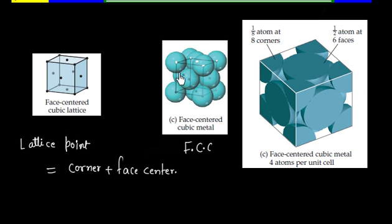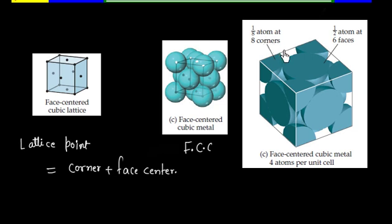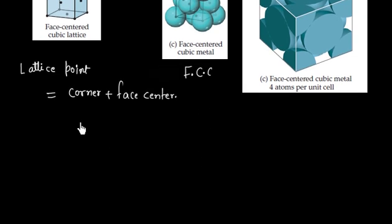Now if I make a cross section to find the effective number of atoms inside this cubic unit cell, we can see we have 1/8 part of the corner atom lying in this unit cell, and half of the face atom lying in this unit cell. So from each corner atom we have 1/8 contribution, and from each face atom we have 1/2 contribution.